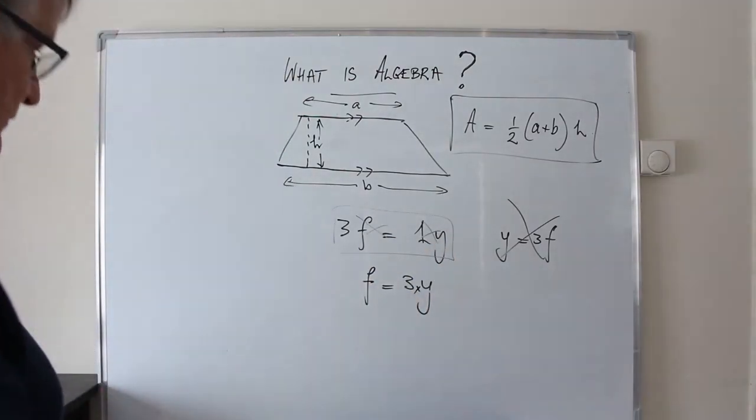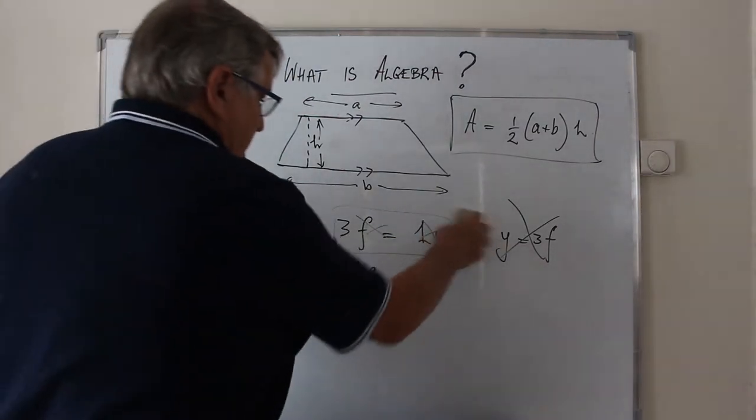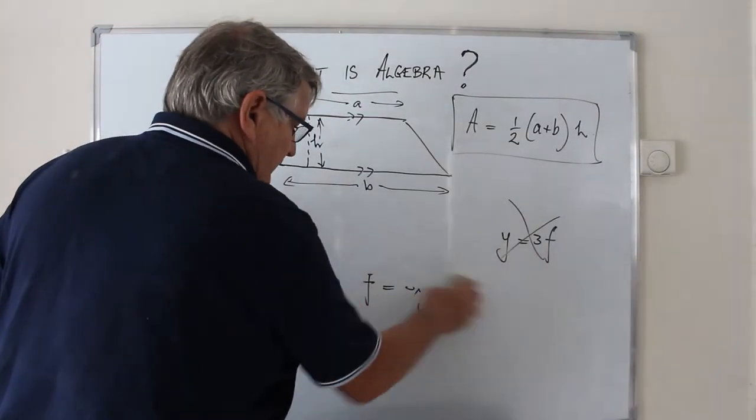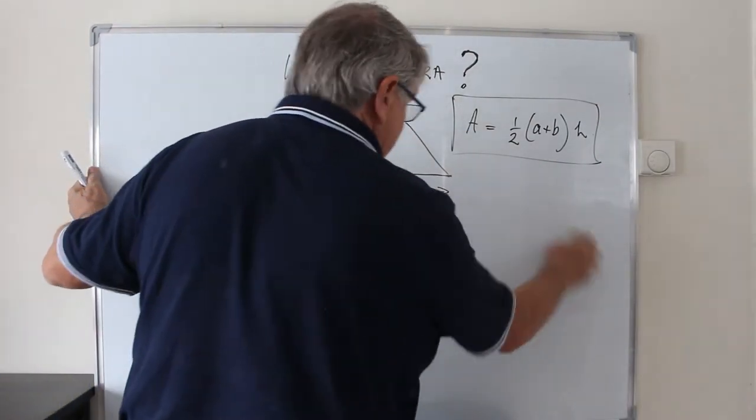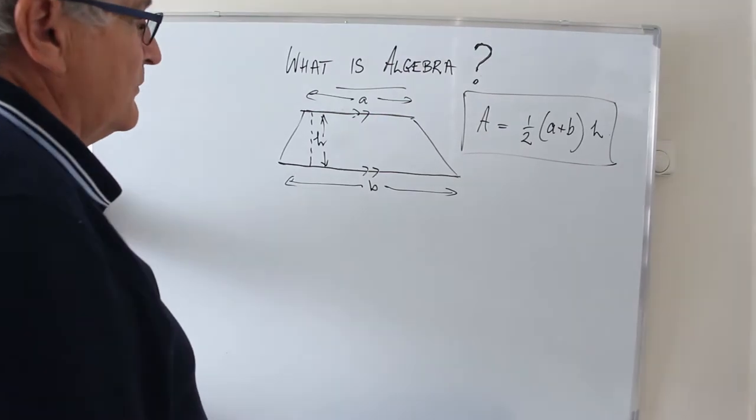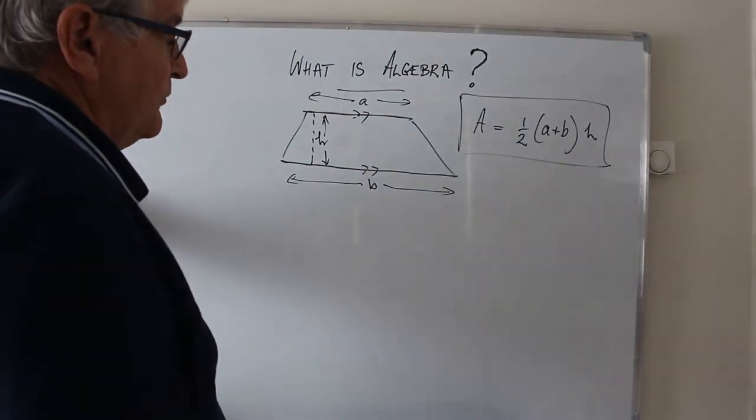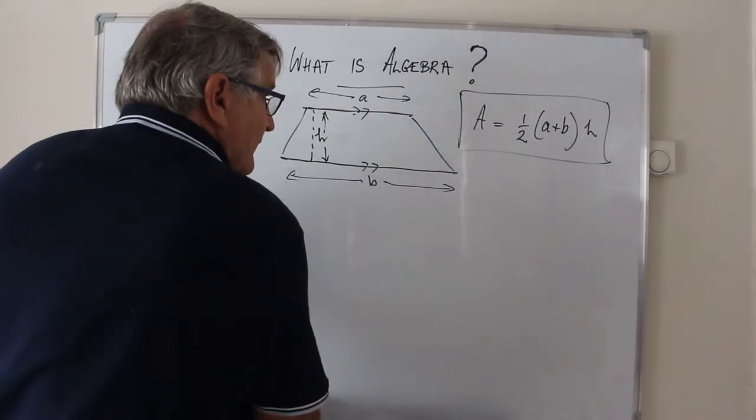These letters that we use to represent quantities have got various names. They can simply be letters or we can call them pronumerals or we can call them variables.